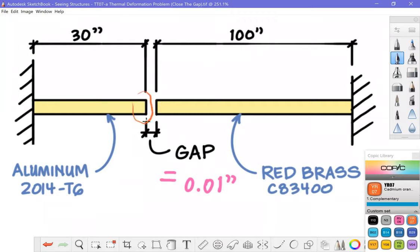and we know that this end is free to move and if we want to close this gap then we're going to want to increase the temperature. We know that both aluminum and red brass have coefficients of thermal expansion and contraction that are positive and that essentially means as the temperature increases those materials will increase in length, increase in volume.